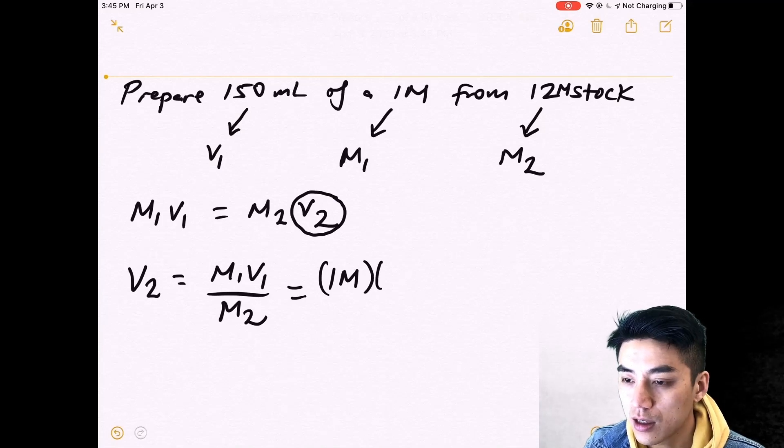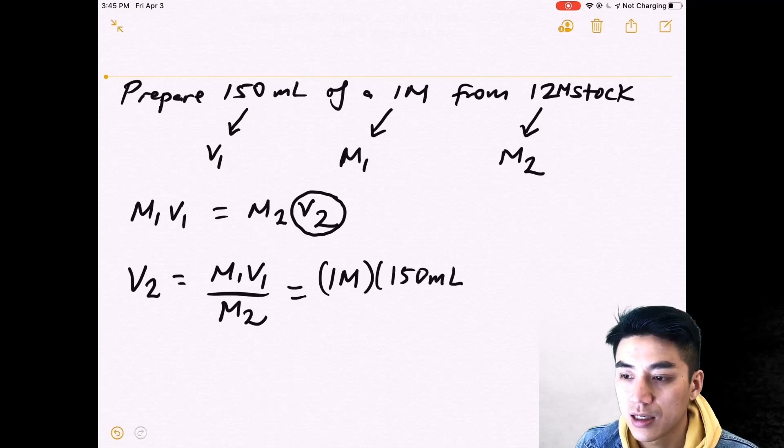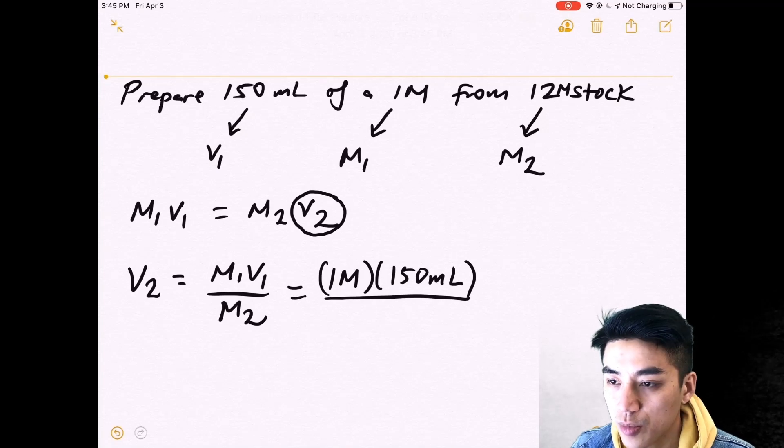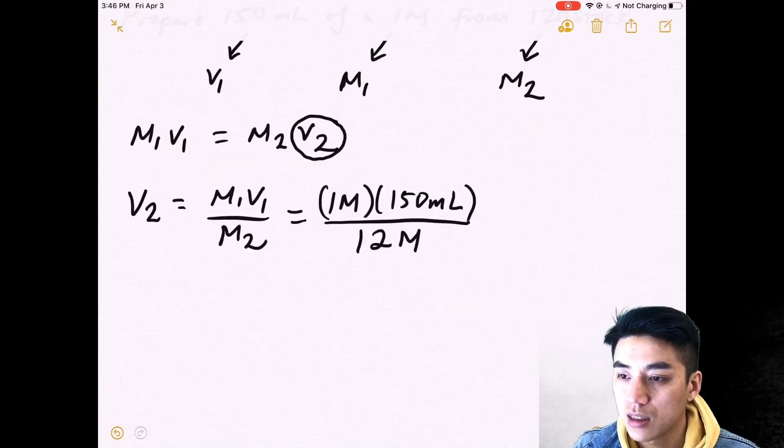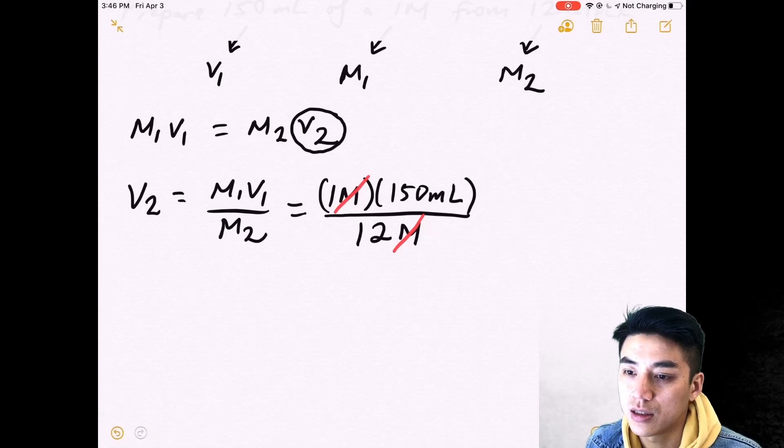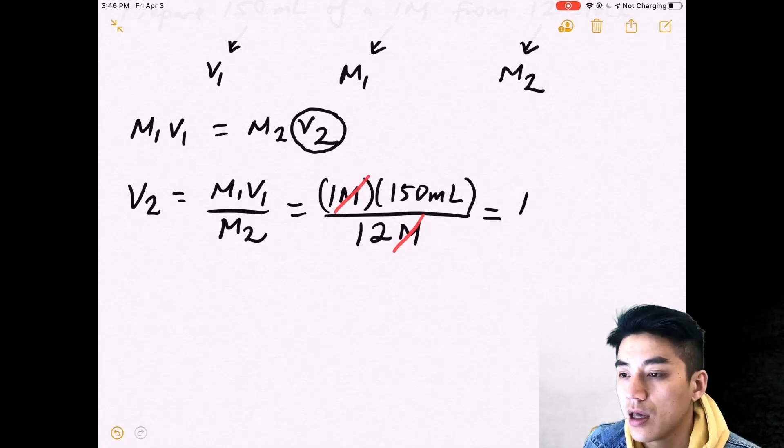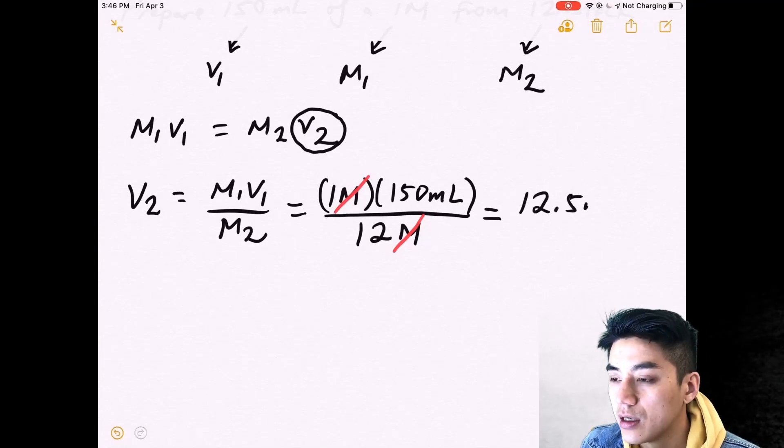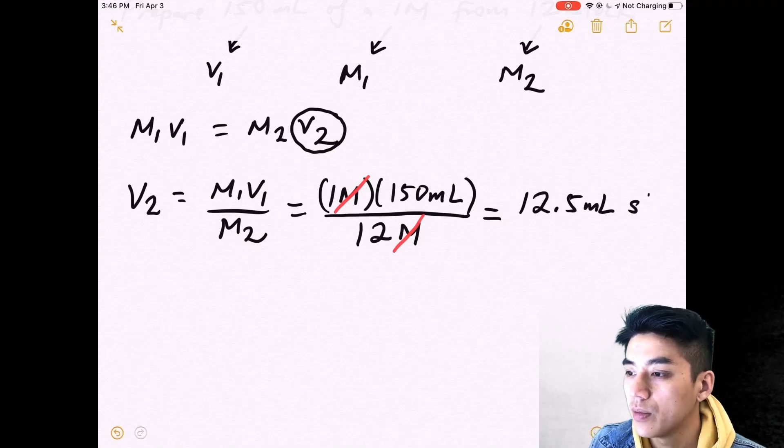Plug in your M1. That's what I do there. Plug in your V1. Great. And now plug in your M2. Cancel out your units. Molarity goes away. You're left with milliliters. That's great. And the math works out so that it's 12 and a half milliliters of stock.